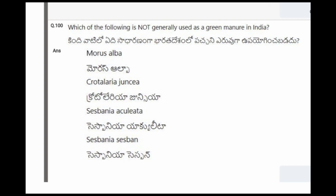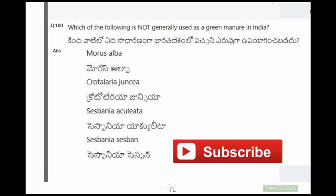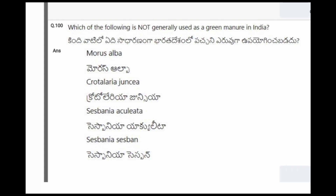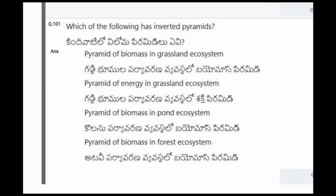Next question: Which of the following is not generally used as a green manure in India? The options are Morus alba, Crotalaria, Sesbania aculeata, Sesbania. The correct option is the first one, Morus alba.